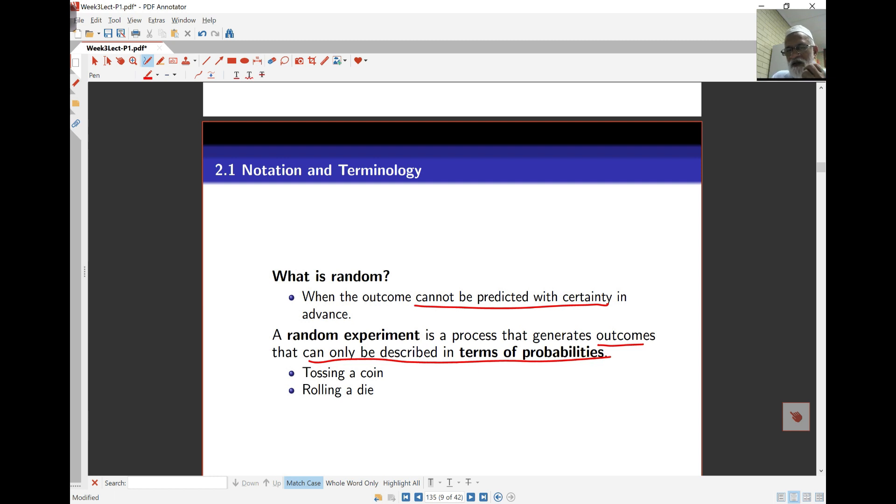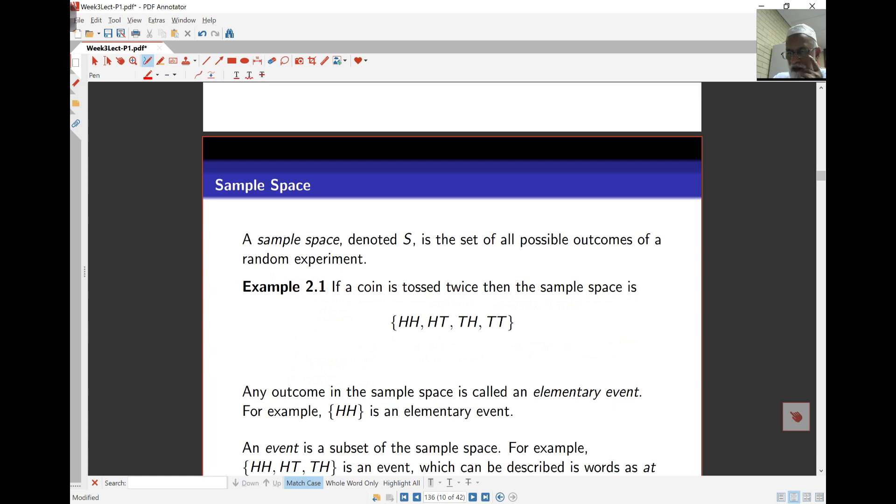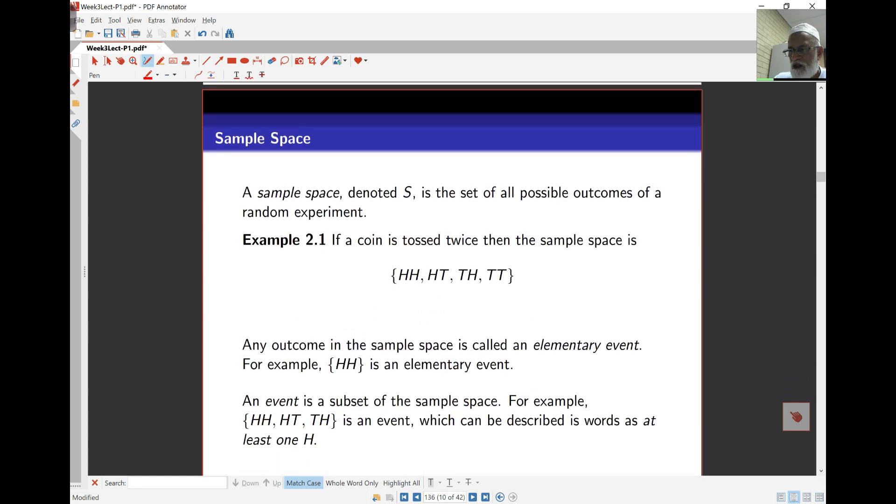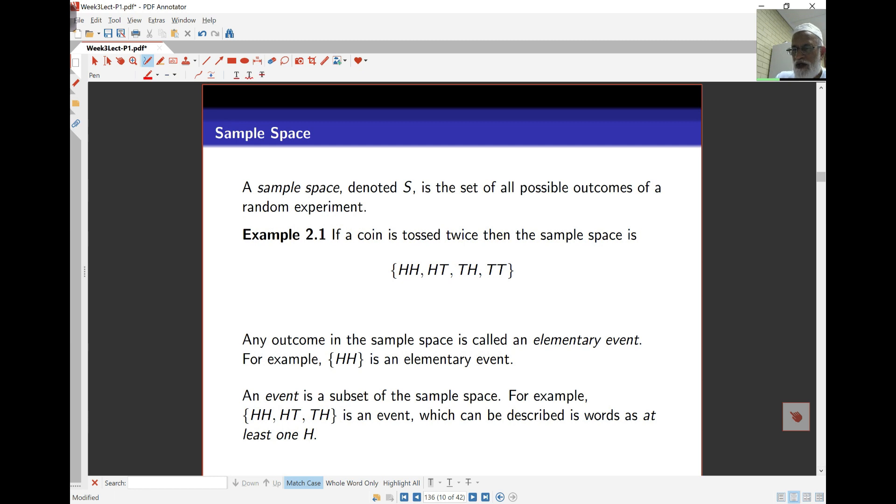Anything that's random, you won't know whether it's going to happen or not, but we can describe and quantify it in terms of probabilities. Tossing a coin or rolling a die are typical everyday examples of randomness. The sample space is the list of all possible outcomes. If I'm tossing a coin twice, the possibilities are two heads, head and tail, tail and head in those orders, and tail and tail.